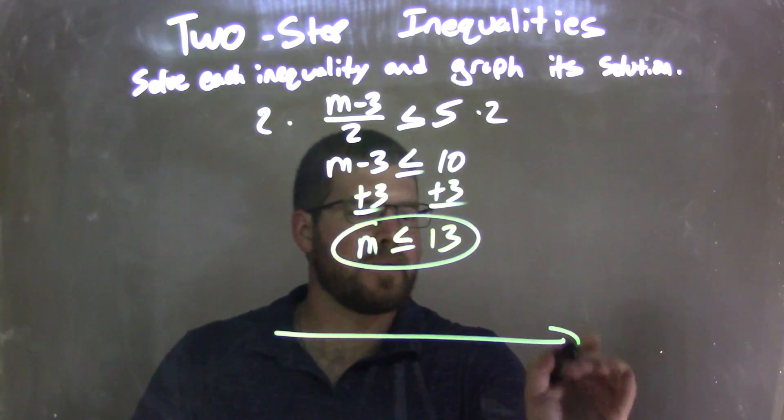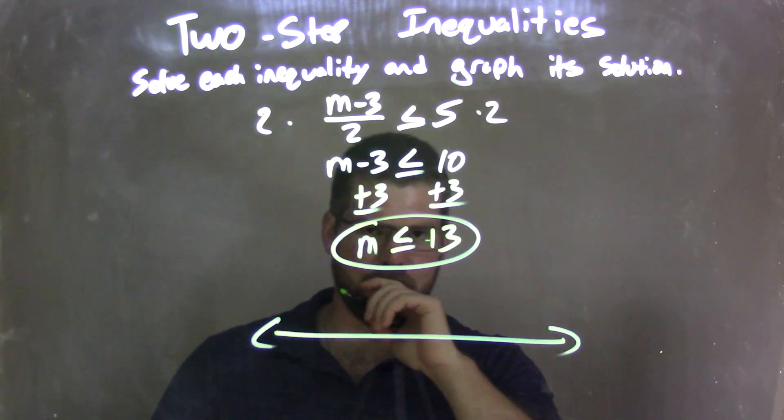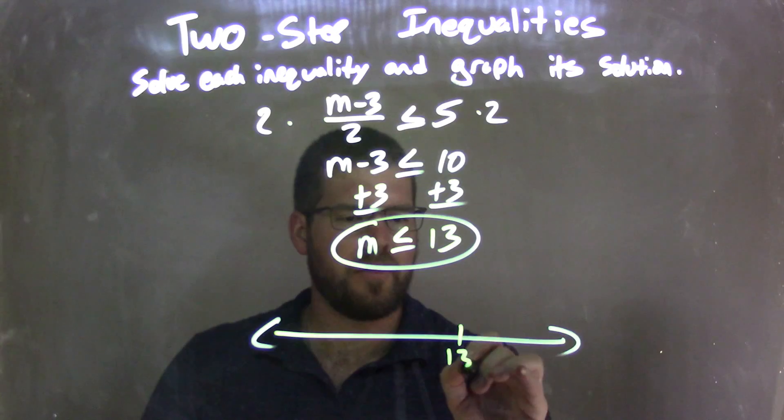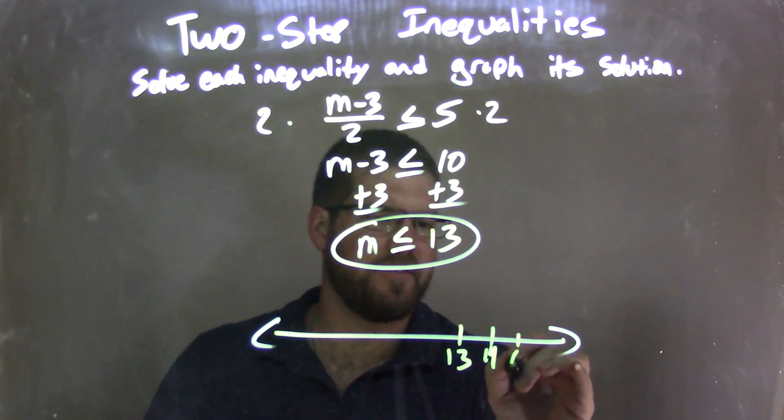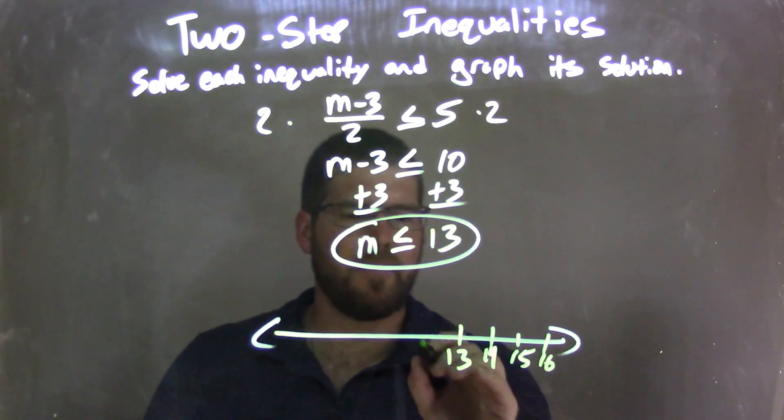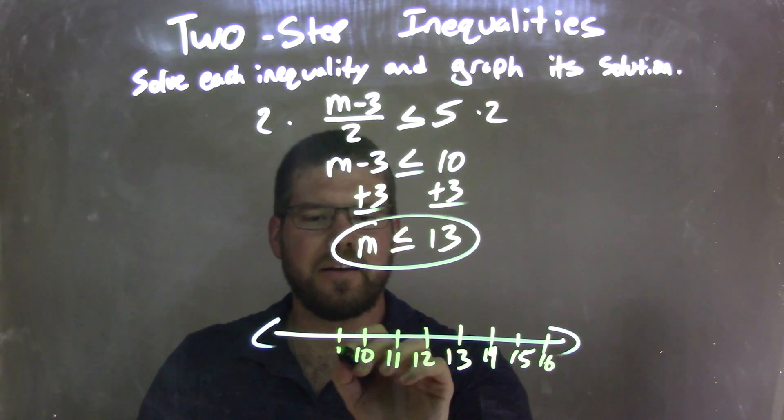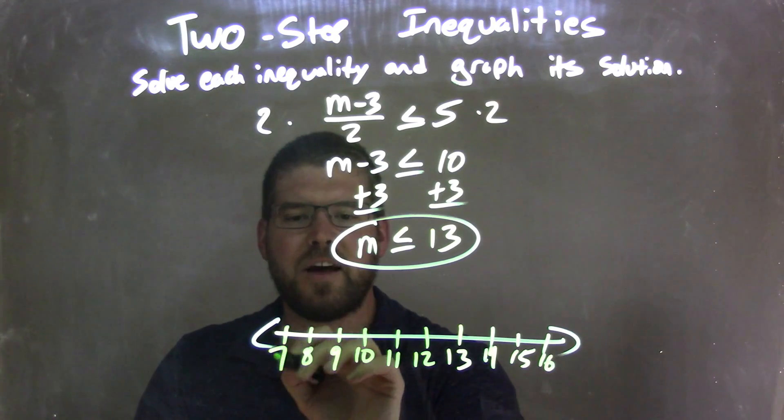But now we need to graph it. A number line down there, and I just put a 13 right here. 13, let's go by 1's: 14, 15, 16, and we have 12, 11, 10, 9, 8, 7.